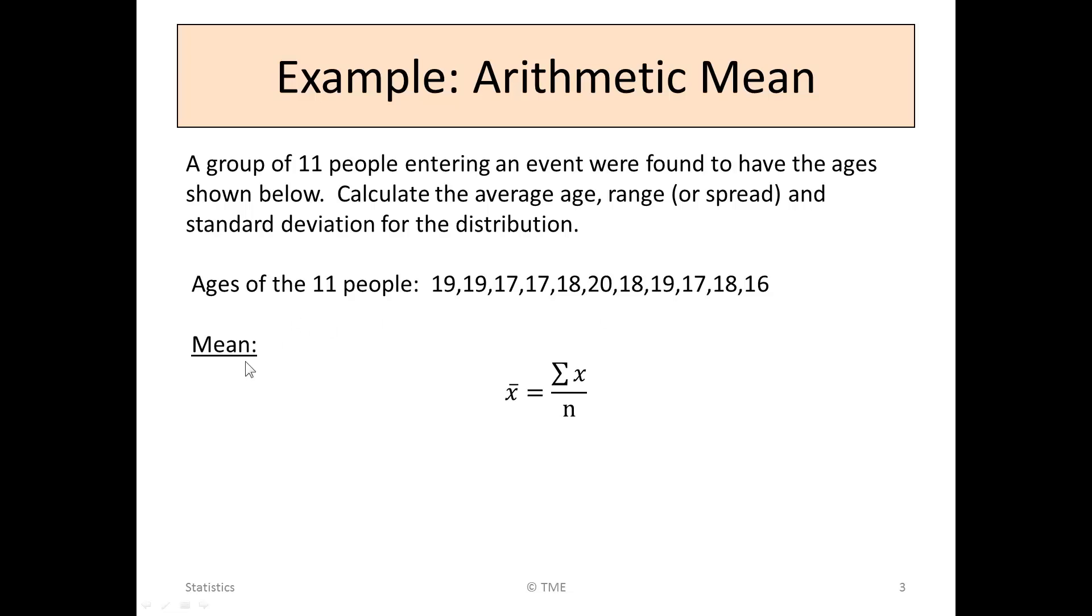The mean, or average, can be obtained using the following formula. X bar is sigma x over n, the sum of all the x values, all the instances, divided by the number of numbers.